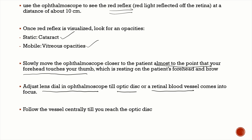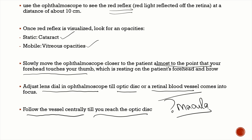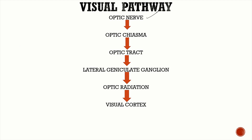Slowly move the ophthalmoscope closer until your forehead touches your stabilizing thumb. Adjust the lens dial until you focus on the optic disc or a retinal blood vessel. If focusing on a vessel, follow it centrally to reach the optic disc. To visualize the macula, ask the patient to look directly at the light source from your ophthalmoscope at the end, after examining the optic disc.